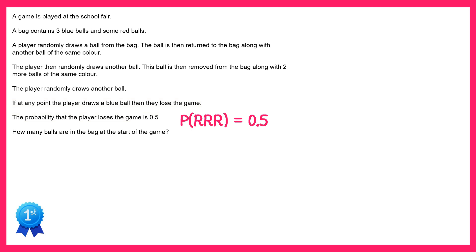We need to try and find an expression for the probability of getting red on all three goes. Now we're told at the start of the question there are three blue balls and the rest of them are red. So we're going to say that there are n balls in total. This would mean if there are three blue, there are n minus three red.